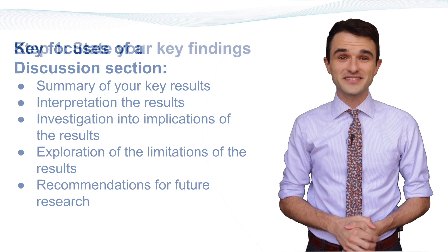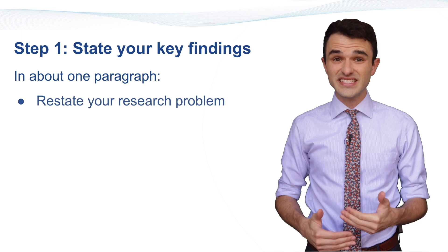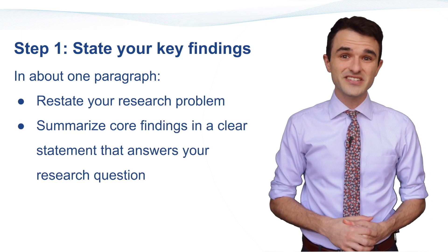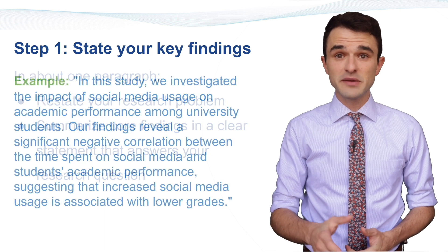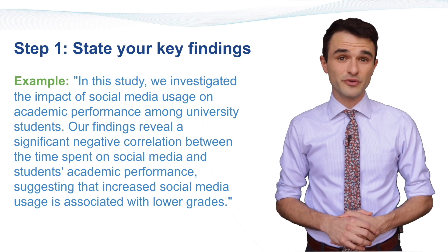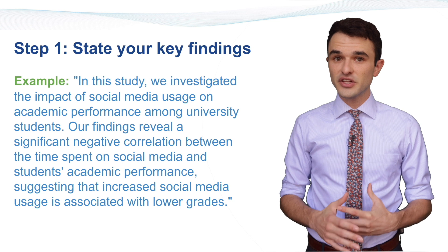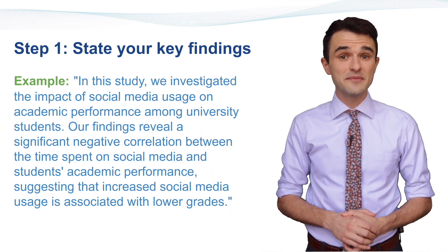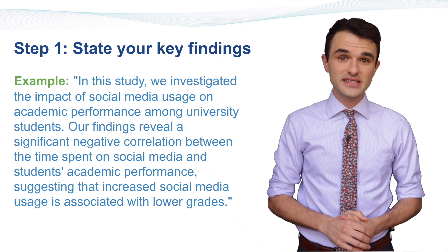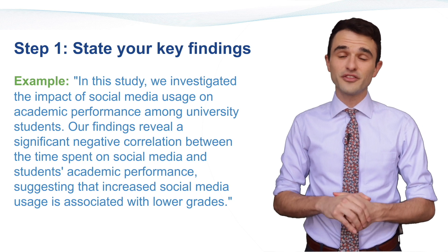Let's jump into the steps on how to write. Step one: state your key findings. In about one paragraph, restate your research problem and summarize core findings in a clear statement that answers your research question. For example: in this study, we investigated the impact of social media usage on academic performance among university students. Our findings reveal a significant negative correlation between the time spent on social media and students' academic performance, suggesting that increased social media usage is associated with lower grades.